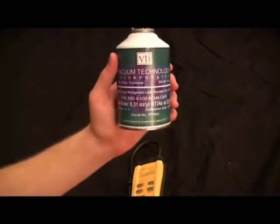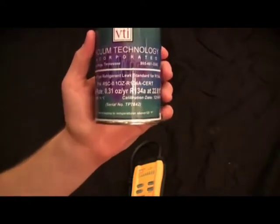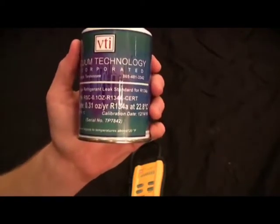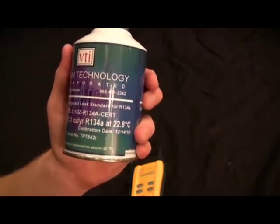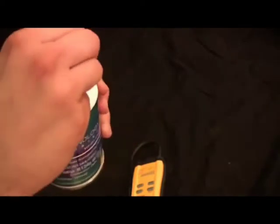Now the SRL-2, what it first stabilizes to is the level of refrigerant inside this room or inside the environment that it's in. Now if we were in a contaminated area, it would stabilize to that level of refrigerant. Now because it's always looking for the highest level of refrigerant, you do have to keep it moving when you're sensing leaks.